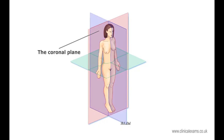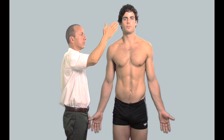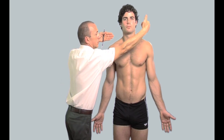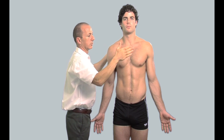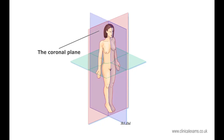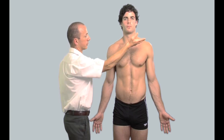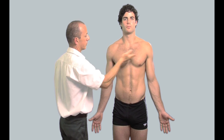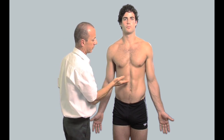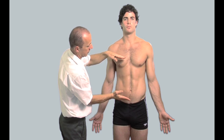The coronal plane is a vertical line that runs in a lateral to lateral direction, dividing the body into non-symmetrical anterior and posterior portions. It is at right angles to the sagittal plane. The transverse plane is marked by a horizontal line dividing the body into superior and inferior portions.